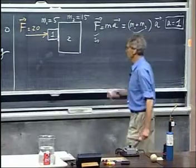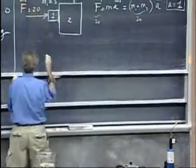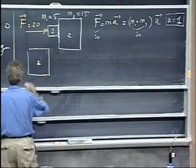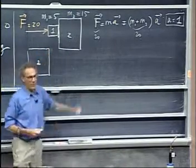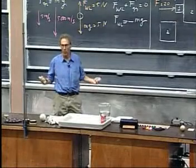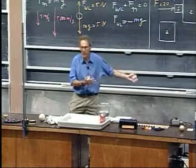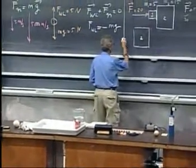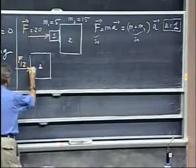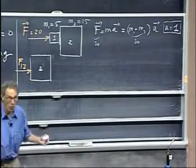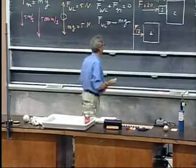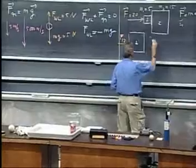Now watch me closely. Now I single out this object. Here it is. Object number two. Object number one, while this acceleration takes place, must be pushing on object number two, otherwise object number two could never be accelerated. I call that force F12, the force that one exerts on two. I know that number two has an acceleration of one. That's a given already. So here comes F equals ma.